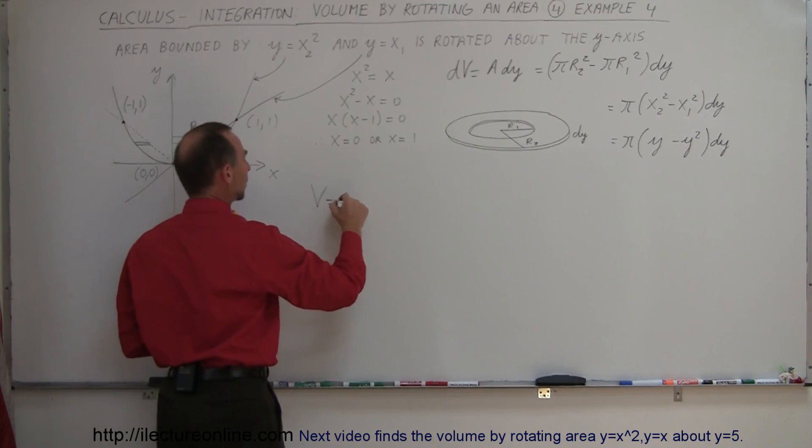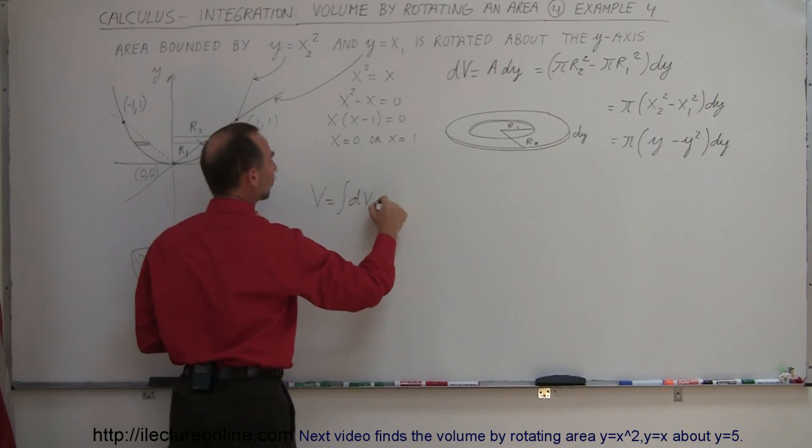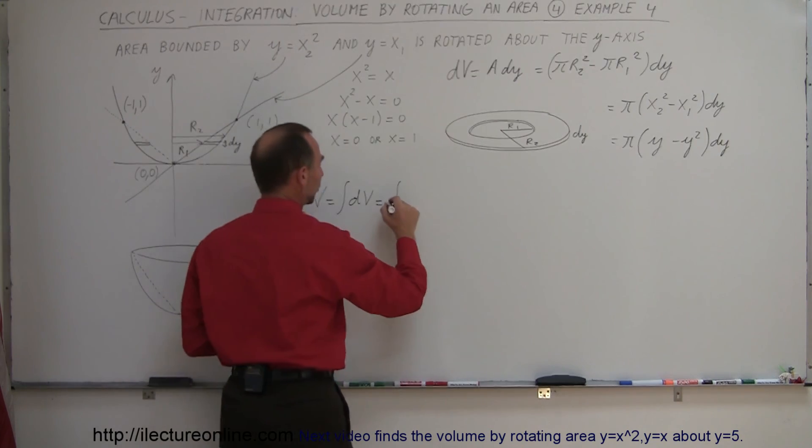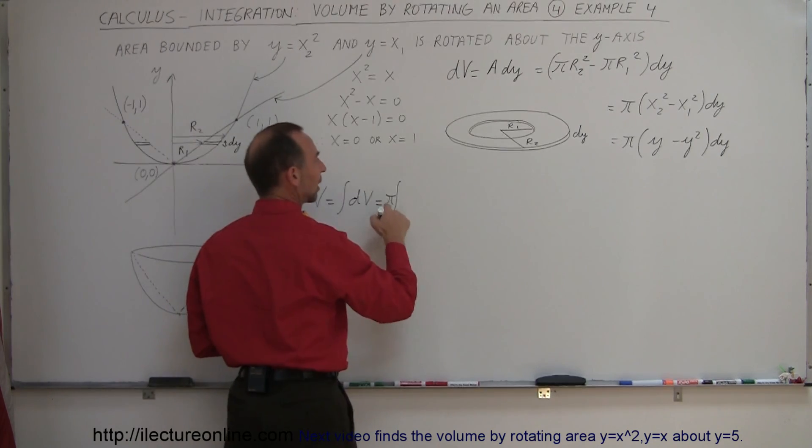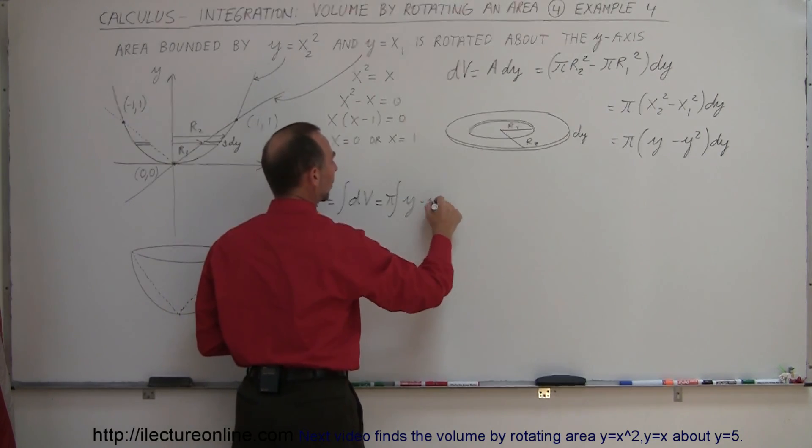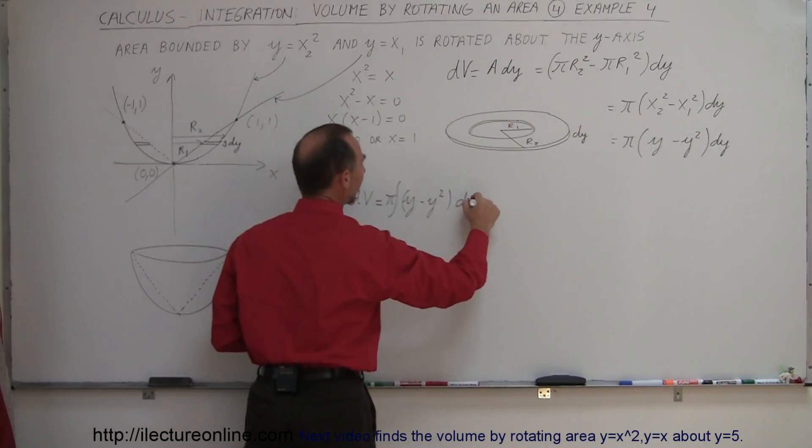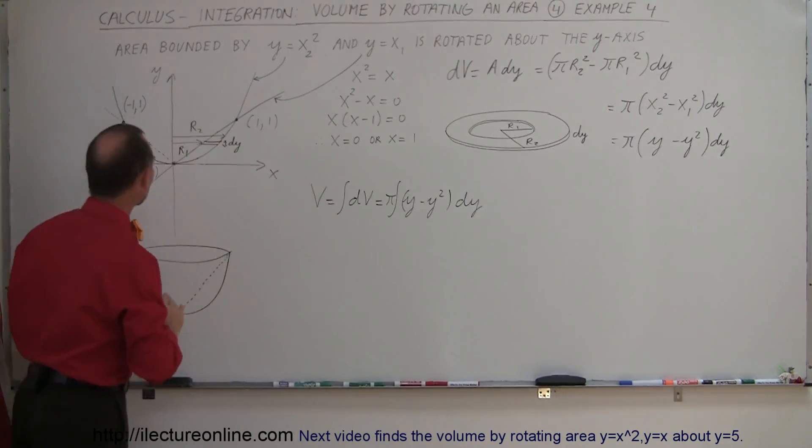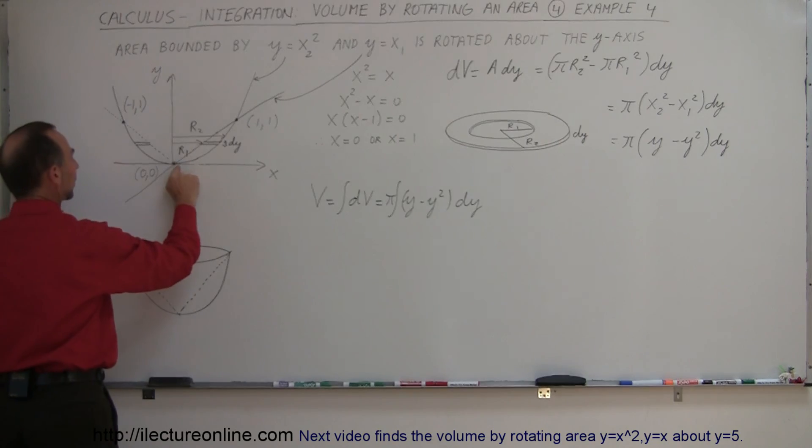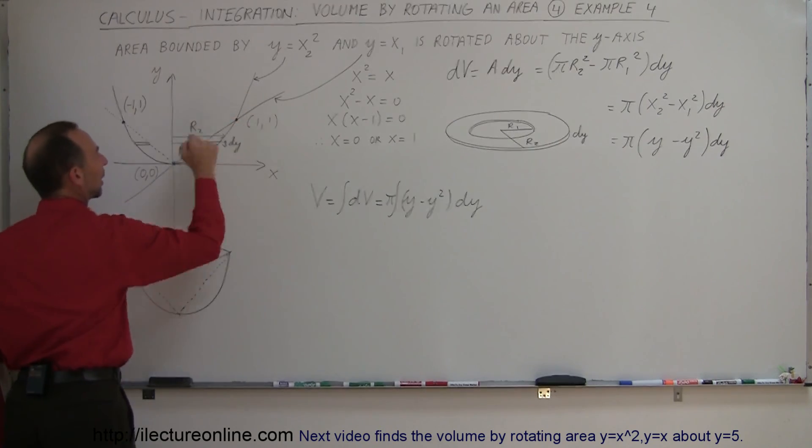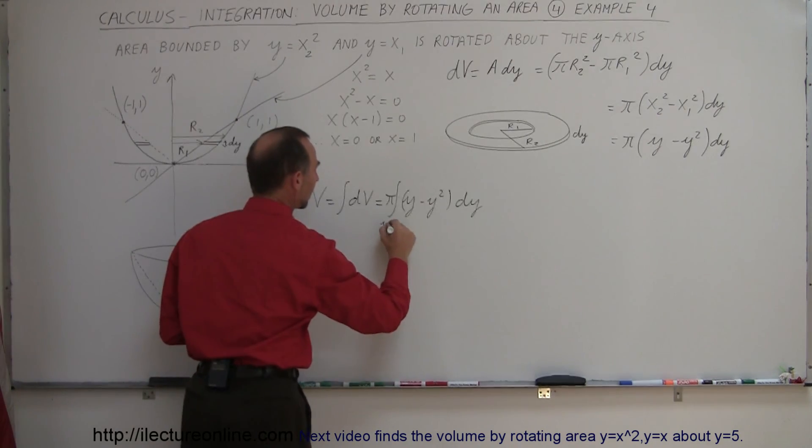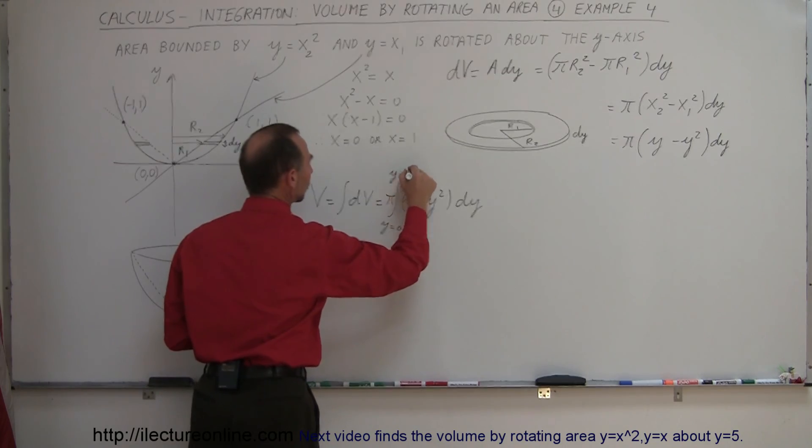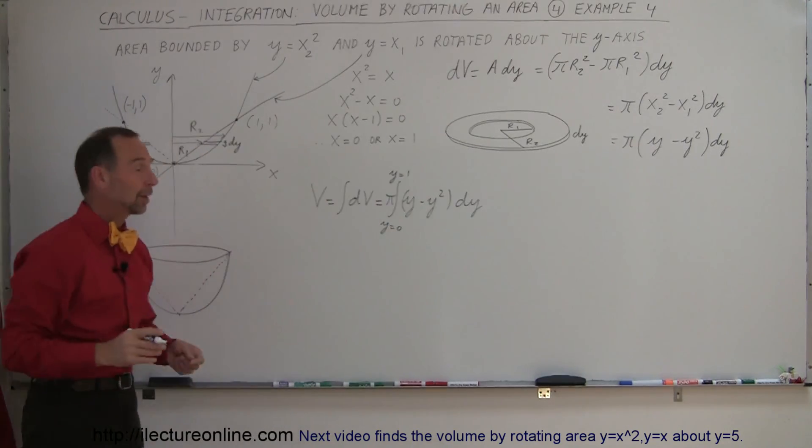And we can then say that the total volume will be equal to the integral of all the dV's, which is the integral of what dV is equal to. We'll take the π outside the integral sign. We have y minus y squared times dy, and the limits of integration, we're going to integrate from the bottom of the bowl, which is y equals zero, to the top of the bowl where y is equal to one. So from y equals zero to y equals one are your limits, and now we're ready to integrate.